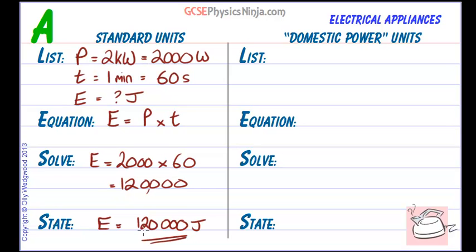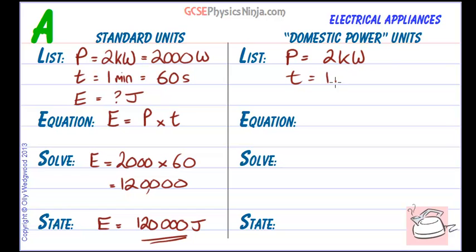Now let's do the same using domestic power units. Make a list of what we know. The power is 2 kilowatts — that's the power rating of the kettle, and we don't need to convert that. The time is one minute, but we do need to convert this, because in domestic power units we use hours.